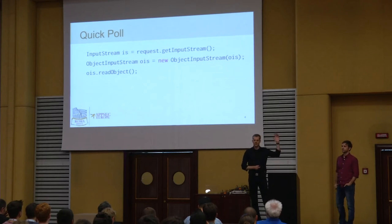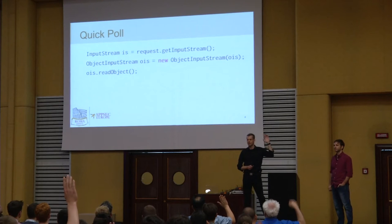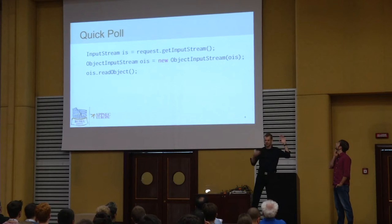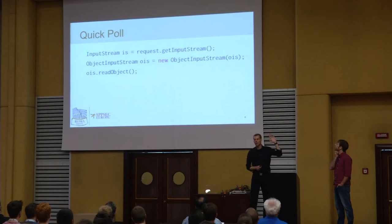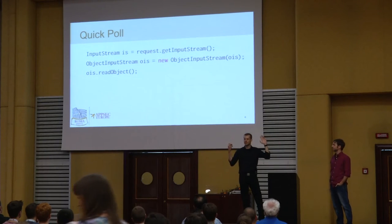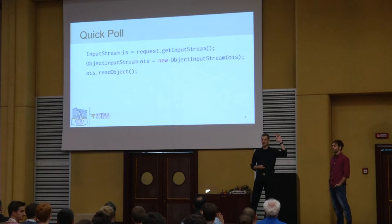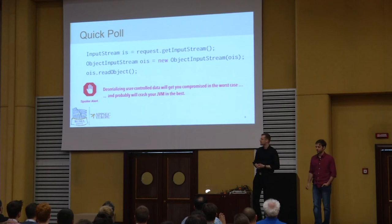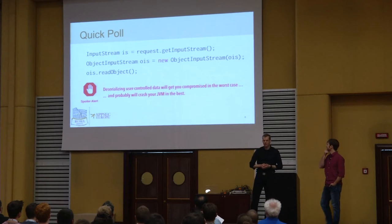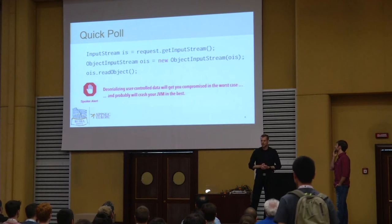Just a quick poll. Please raise your hand if you are somewhat familiar with what this code is doing — basically deserializing something untrusted from an outside source. And how many of you are familiar with the inner workings of the read object method, what the JVM is doing under the hood when deserializing something? A little bit less. And finally, this can lead to remote code execution — exploitable code that attackers can use to gain remote code execution on a system, which we will cover in detail.